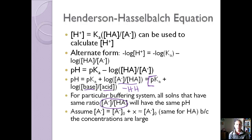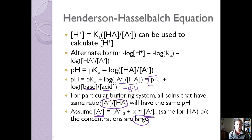We're also assuming that the concentration of the conjugate base — and this applies for the weak acid as well — equals the initial plus X. Since X is really small, we're essentially saying the equilibrium concentration equals the initial concentration. We can do this because those concentrations are very large, which is an indicator of a buffer solution: both your HA and your A⁻ concentrations are large.